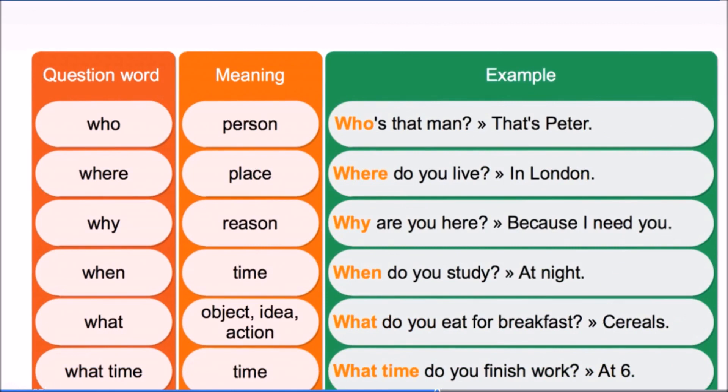Question word 'who' is for person. Example: Who's that man? That's Peter. 'Where' is for places. Where do you live? In London.